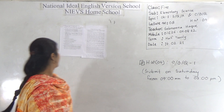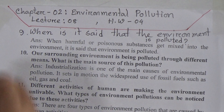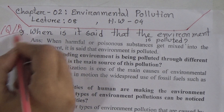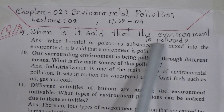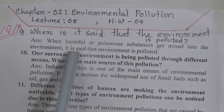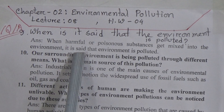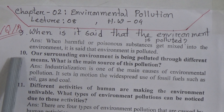Dear students, this is our Lecture 8 and you will get Homework Number 4 from this class. First, I will discuss short question answer. Short question answer number 9: when is it said that the environment is polluted? The answer is: when harmful or poisonous substances get mixed into the environment, it is said that the environment is polluted.